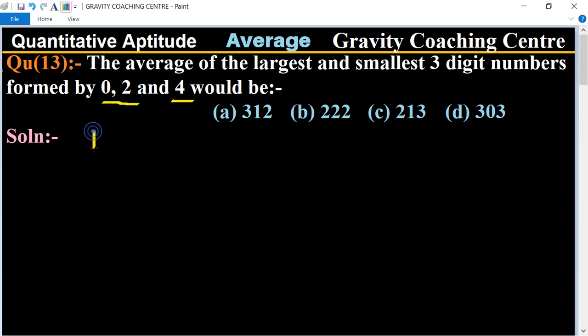The largest three-digit number: to get the largest one, we arrange the digits as 4, 2, 0, which equals 420.